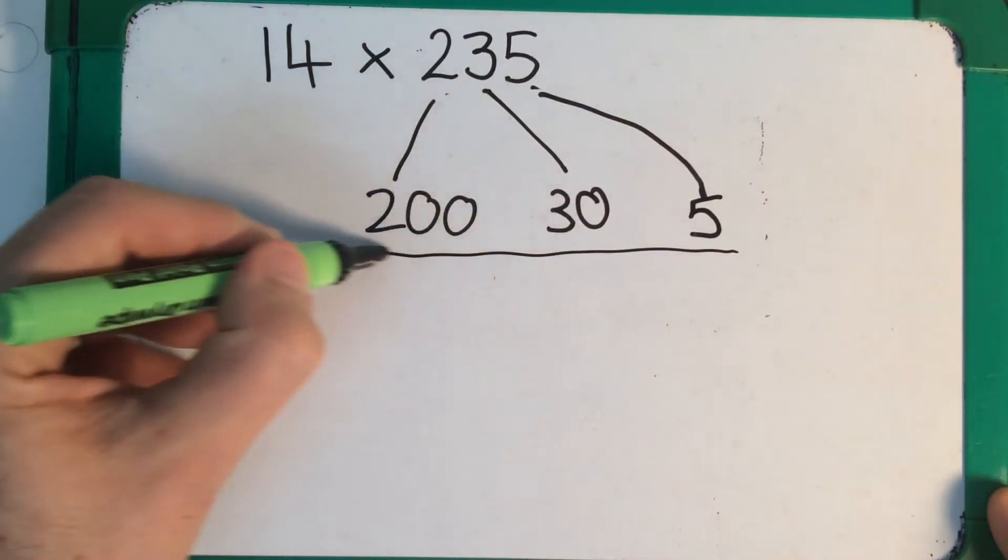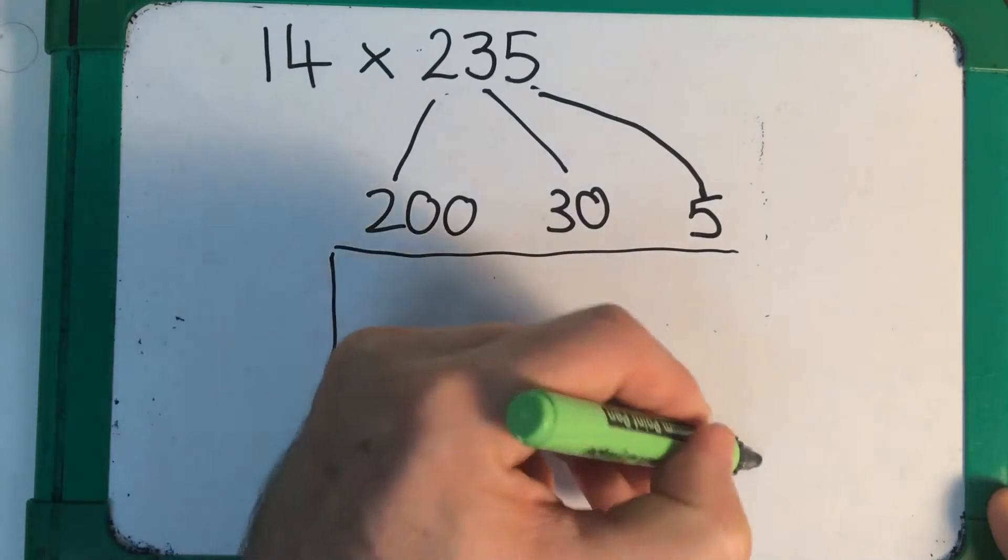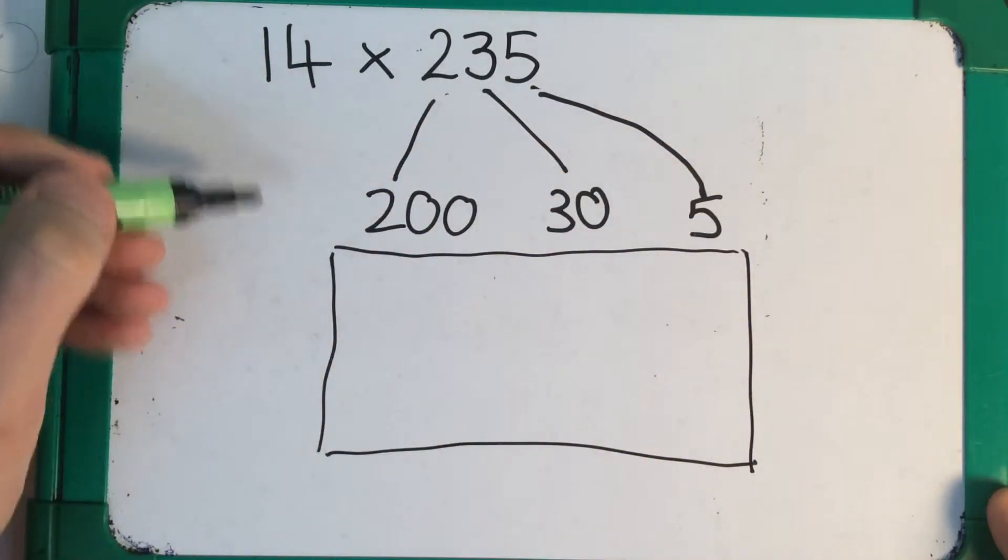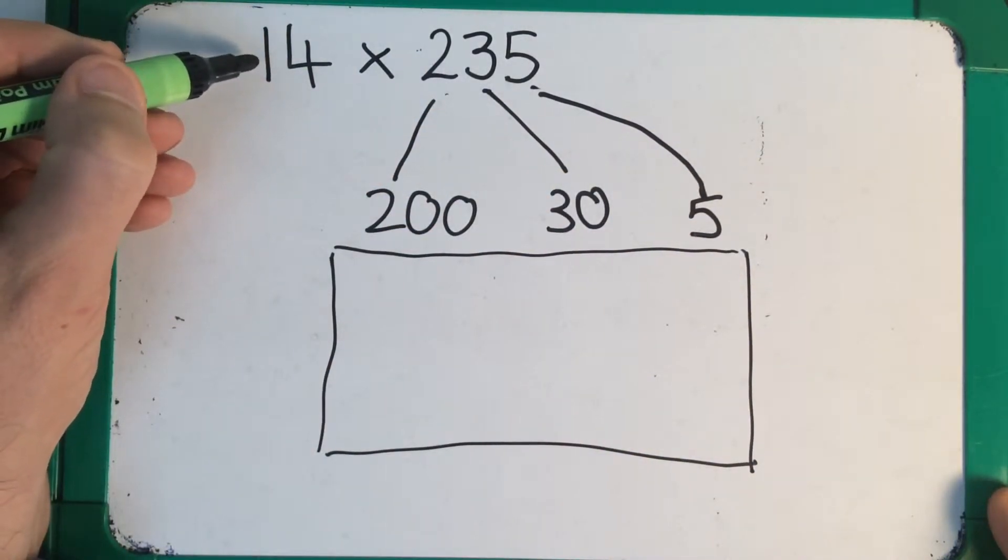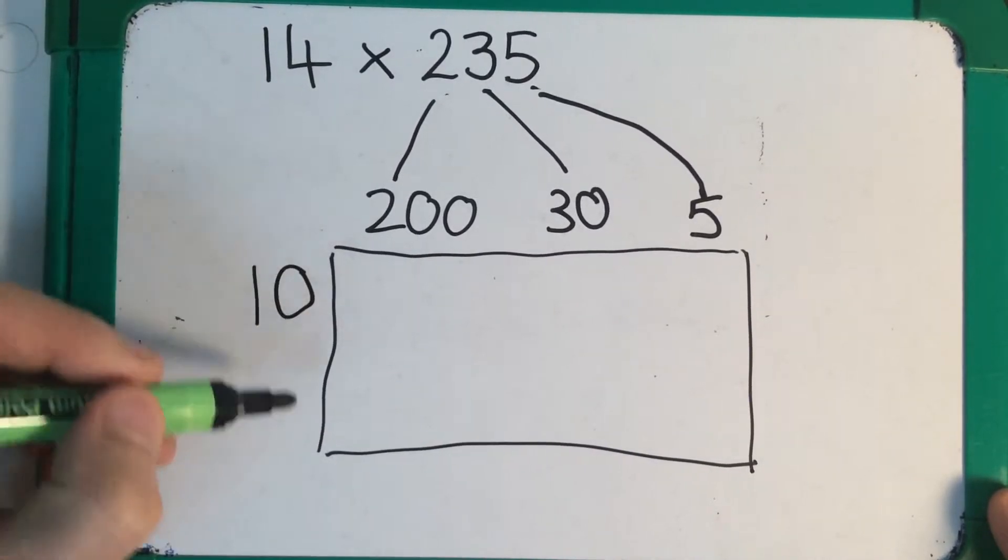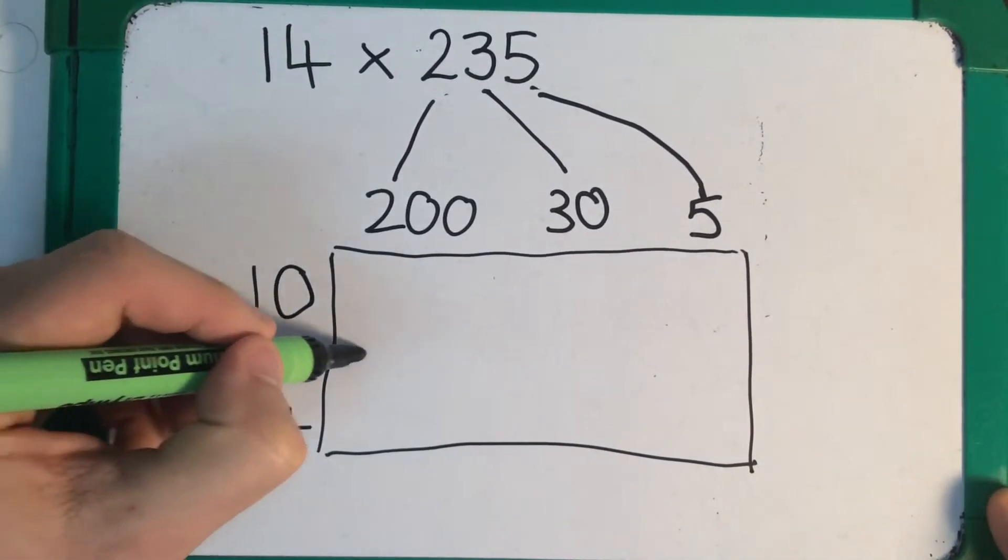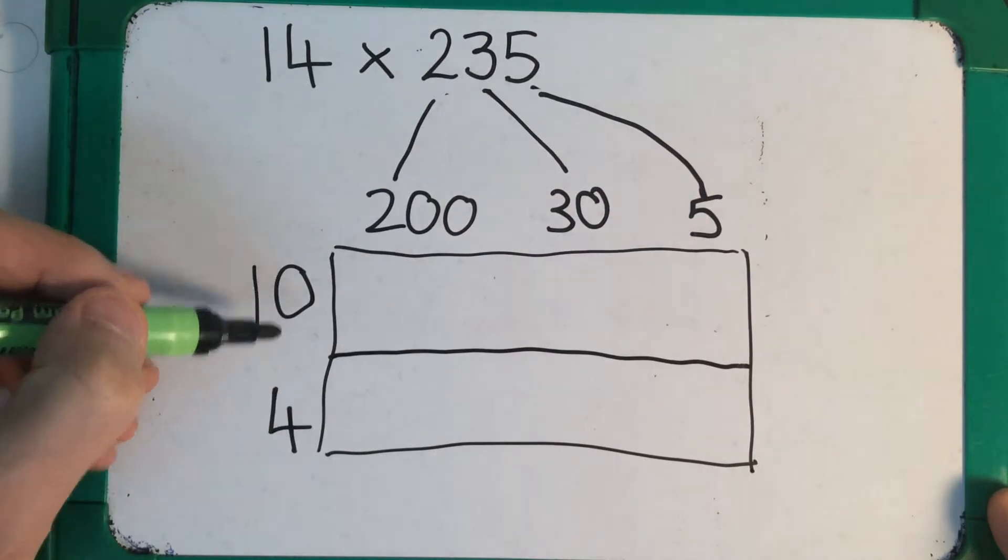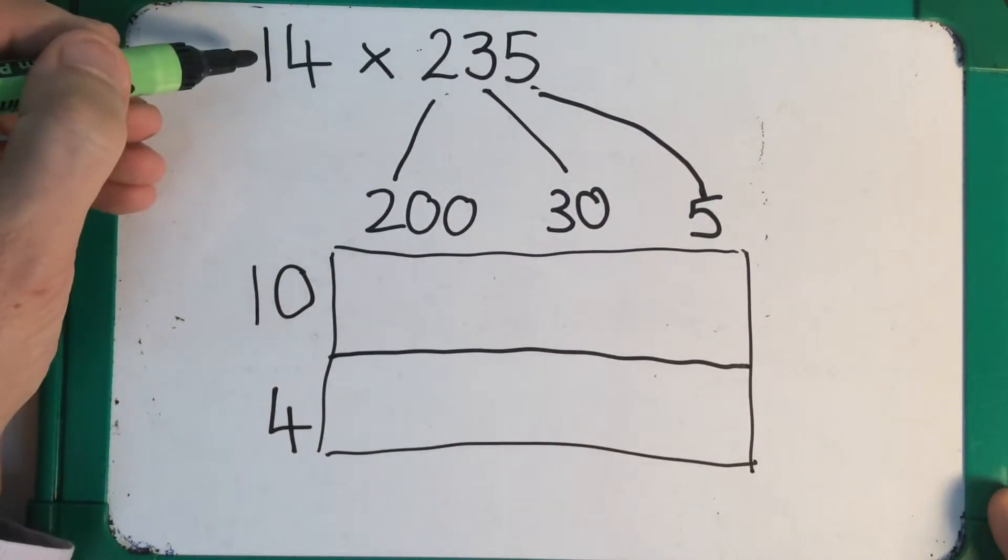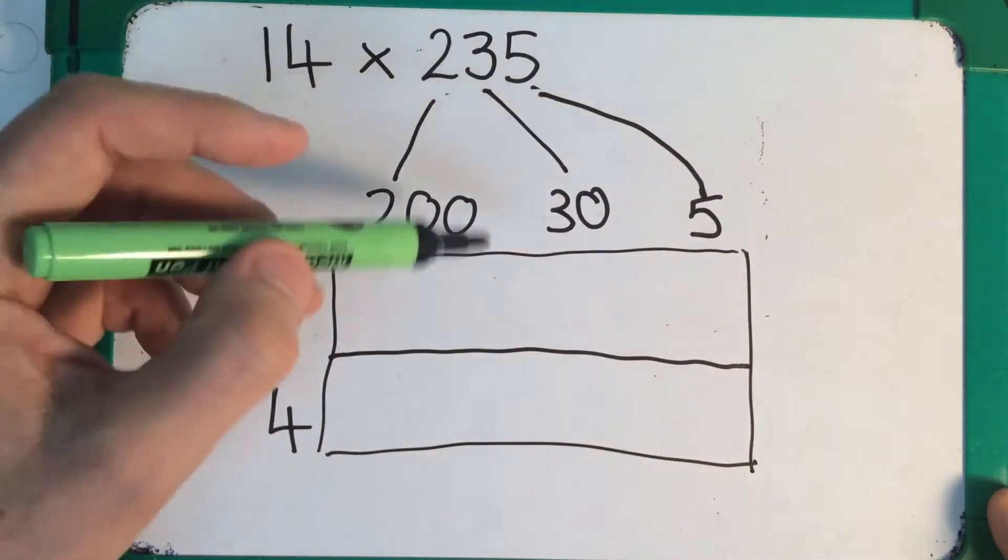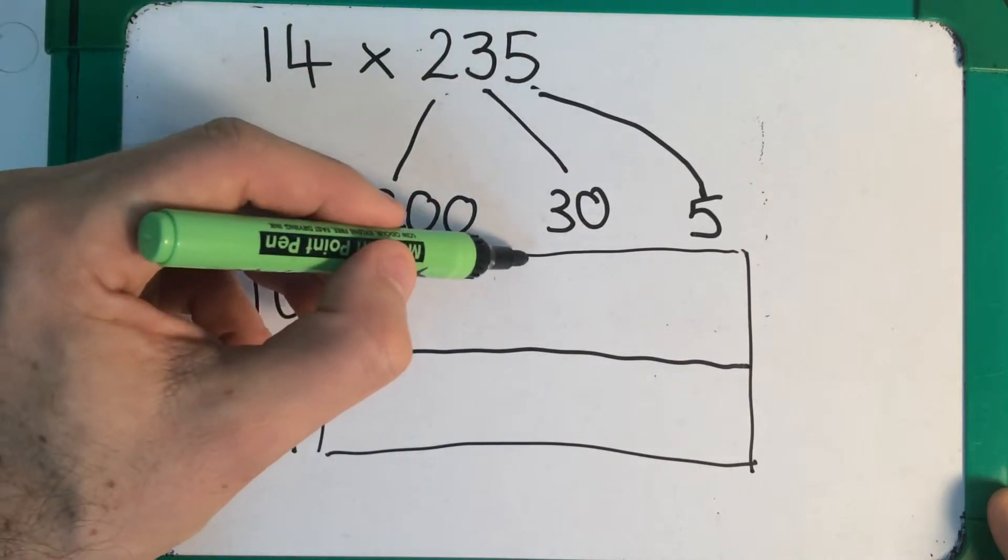And I'm going to draw a grid beneath that. I'm now going to partition my 14. 14 is made up of a 10 and a 4. I'm going to draw 2 rows because I've got 2 parts of this number and 3 columns because I've got 3 parts of this number.